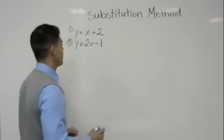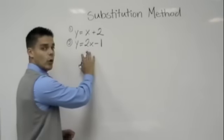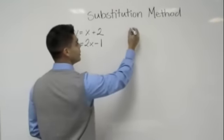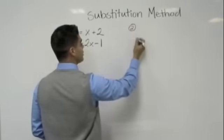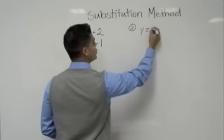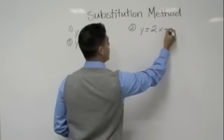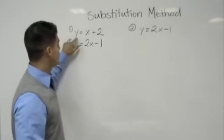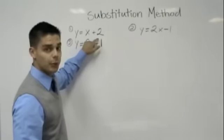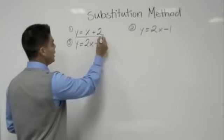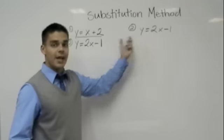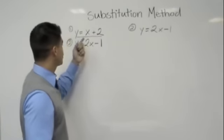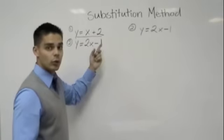What am I talking about here? I'm going to go ahead and take equation number 2 here. That's why I like to number it, which is y = 2x - 1. In equation 1, I already know what y is equal to. It's actually equal to x + 2. Therefore, in equation 2, I'm going to take out my y and I'm going to substitute it for what y equals.